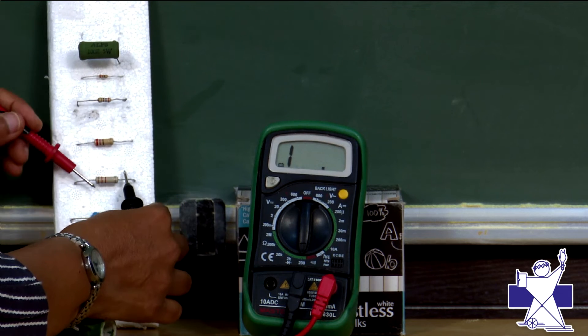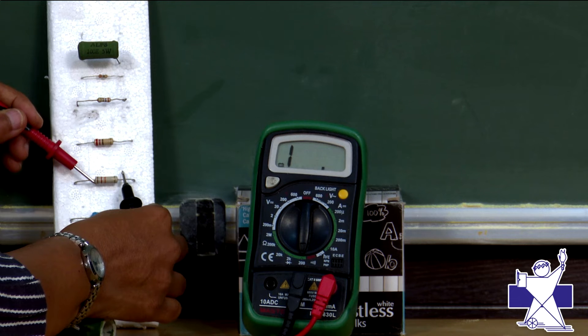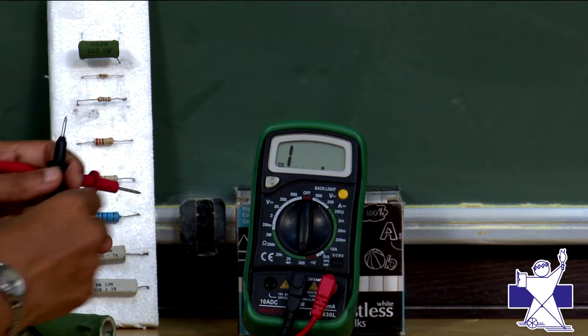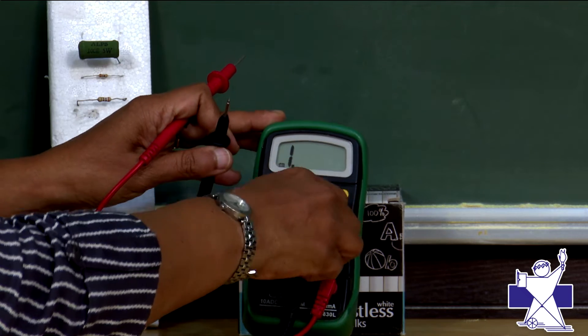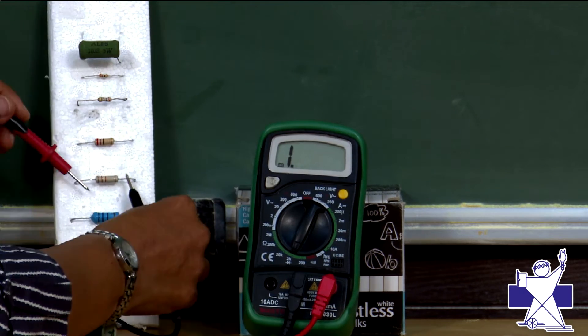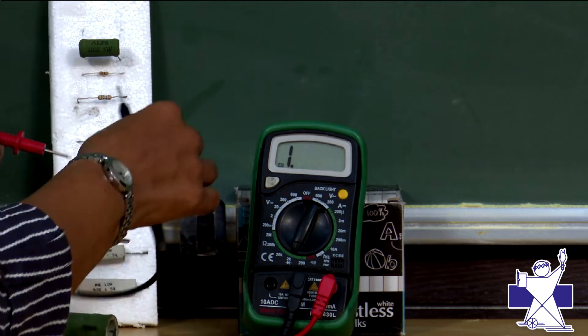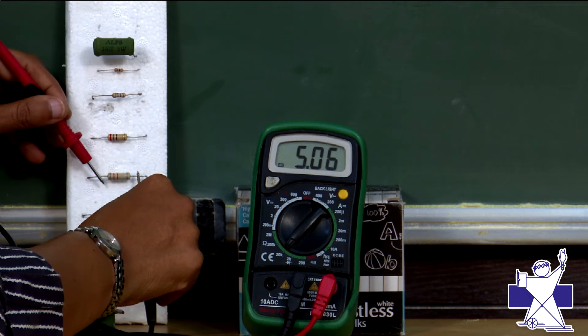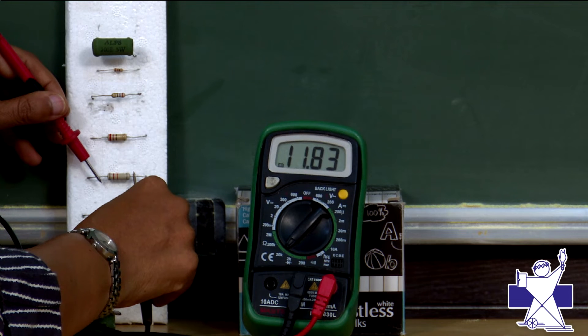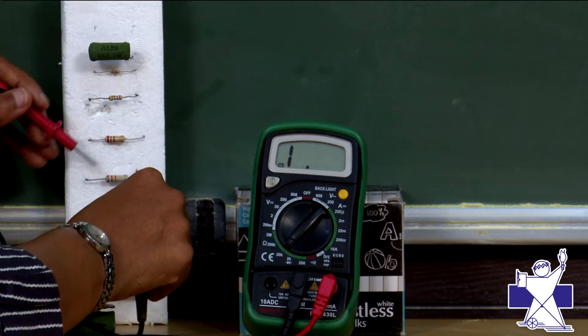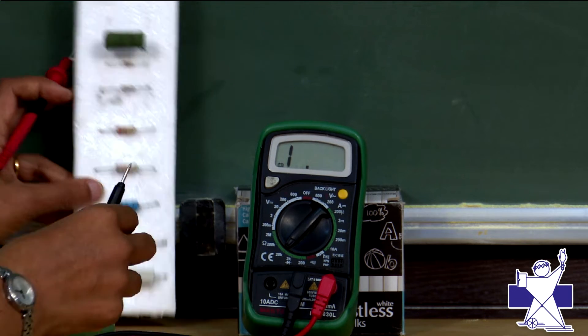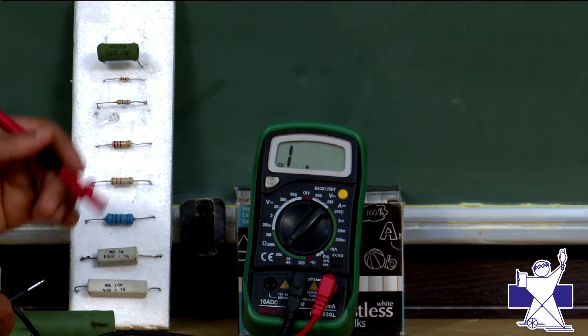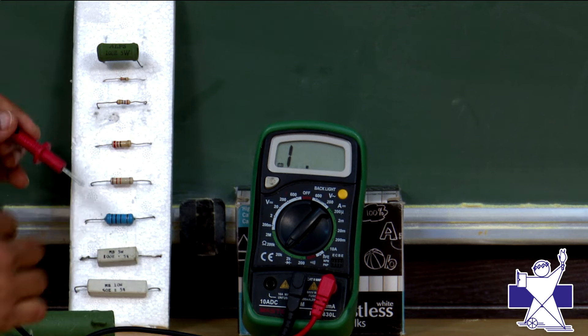Let us measure another resistance. Again see, this also means that it is not in the range. We have to change the range and check it. Suppose I am bringing it to 2000 ohms. Again it is out of range. So, again I am changing and let us measure this. Now, you are getting, see it is 11.86 kilo ohms. It is 11 kilo ohms plus minus tolerance is always there. So, in this way we can measure the resistance.